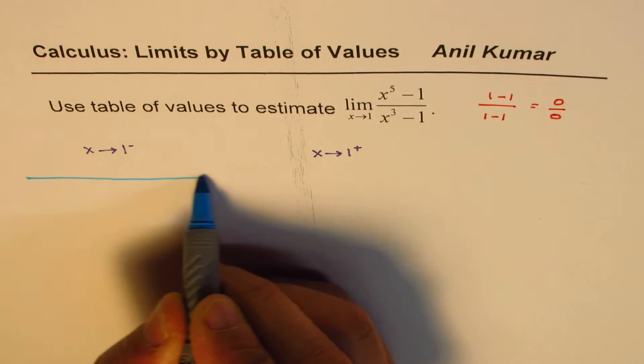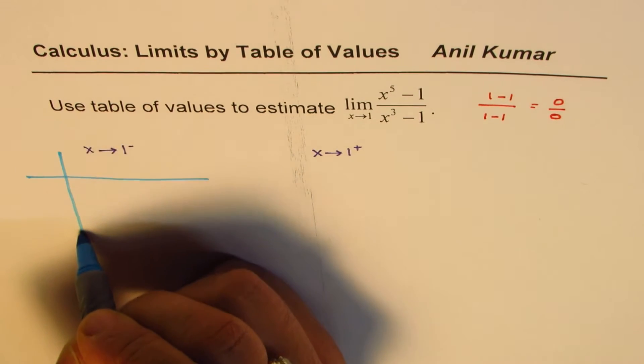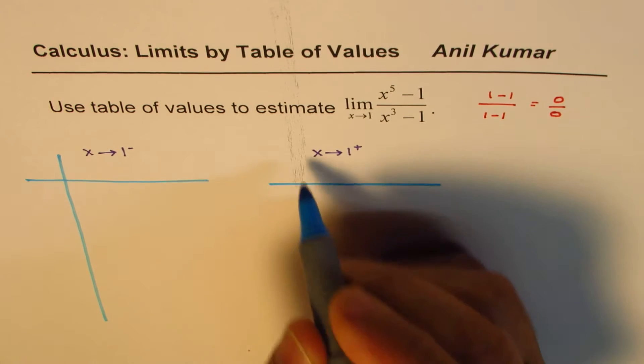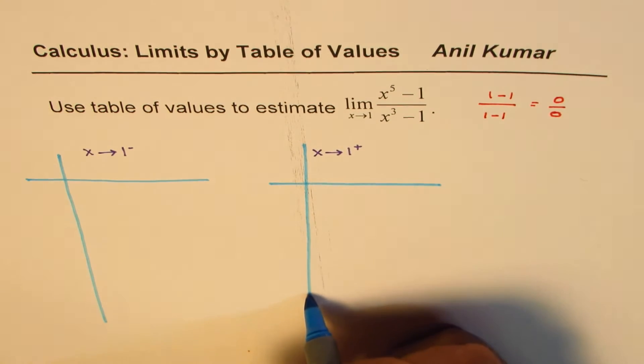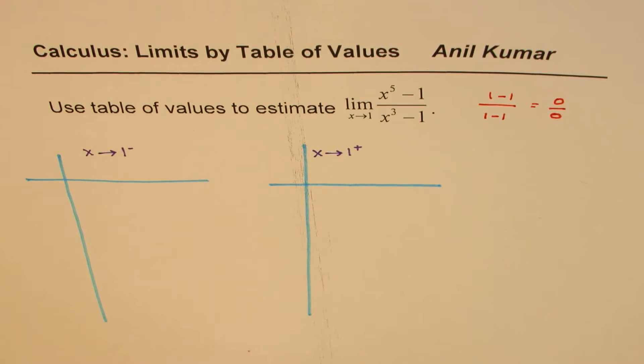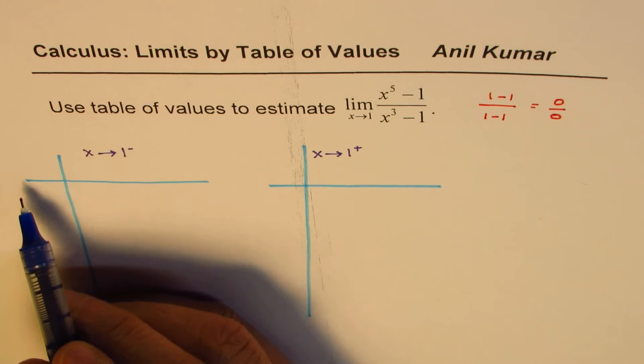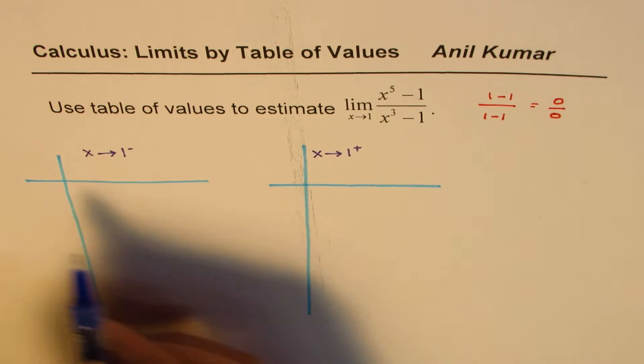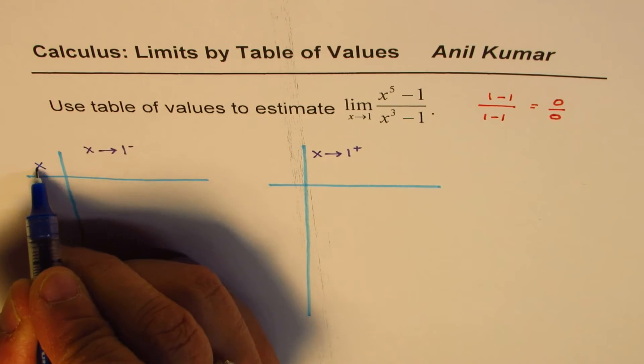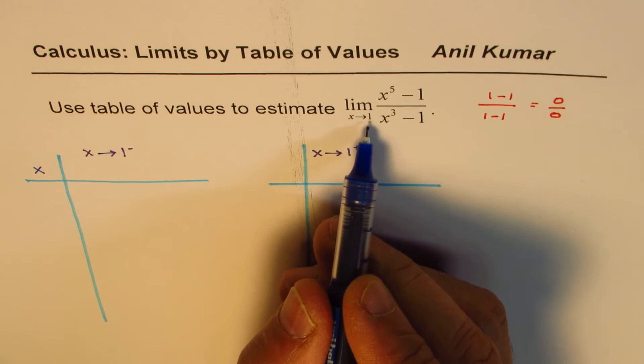Let's see. We'll make just a table of values here as suggested in the question itself and see what value does the function approach. So in our case, we are approaching 1 from left side and from the right side. So the x values approaching from the left side means it is slightly less than 1.